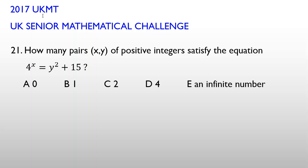2017 UKMT UK Senior Mathematical Challenge, problem number 21. How many pairs (x,y) of positive integers satisfy the equation 4^x = y^2 + 15? Because we know x and y are integers, so if I rewrite the equation here, it will be 4^x = y^2 + 15.